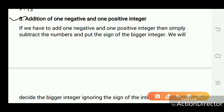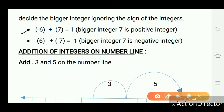Case three: addition of one negative and one positive integer. Subtract the numbers and put the sign of the bigger integer, ignoring the signs. For minus six plus seven: minus plus is minus, but seven is the bigger positive integer, so the difference is positive one. For six plus minus seven: plus minus is minus, and seven is the bigger negative integer, so the difference is minus one.